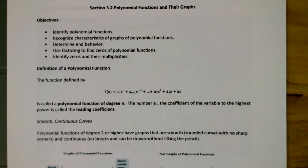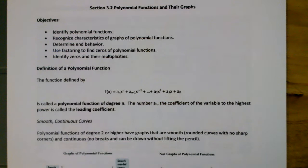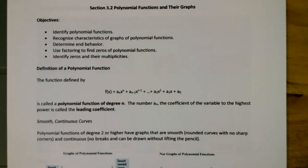In this video, we're going to talk about section 3.2 dealing with polynomial functions and their graphs. In this section, we're going to talk about how to identify polynomial functions, recognize characteristics of graphs of polynomial functions, determine end behavior, and use factoring to find zeros of polynomial functions and identify zeros and their multiplicities.